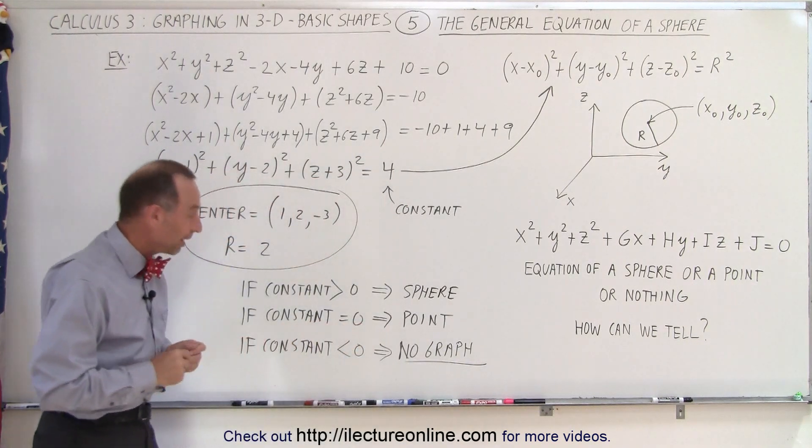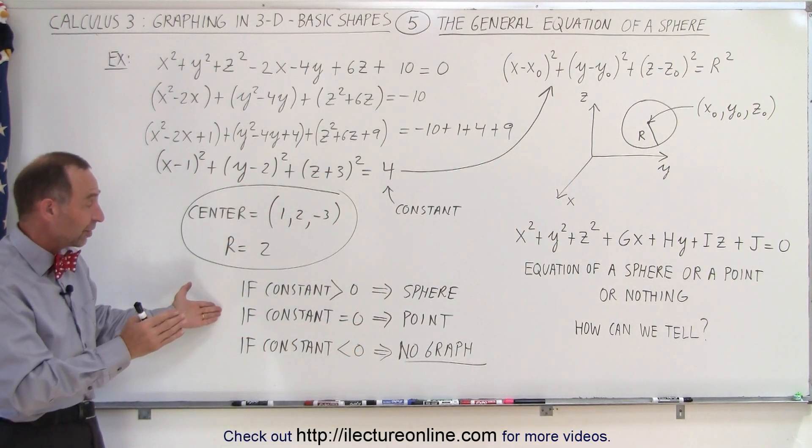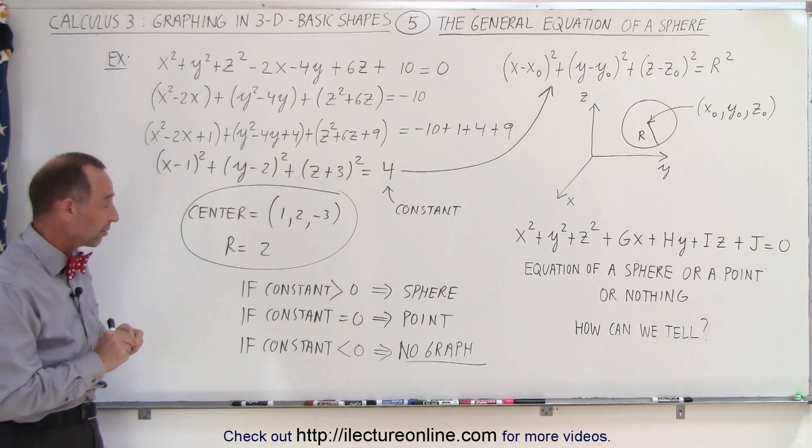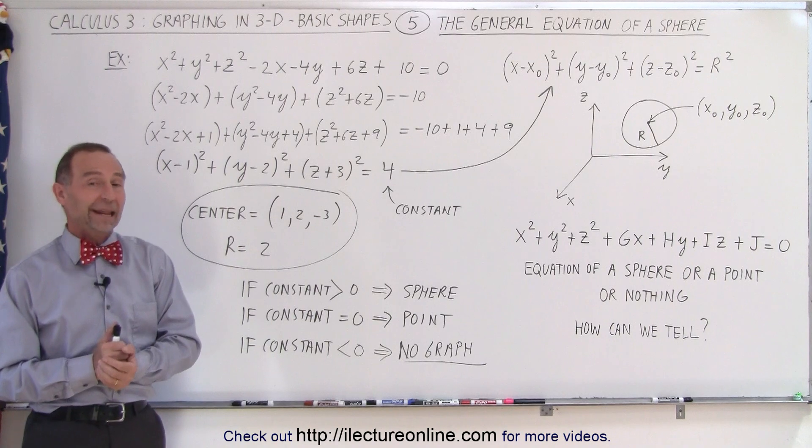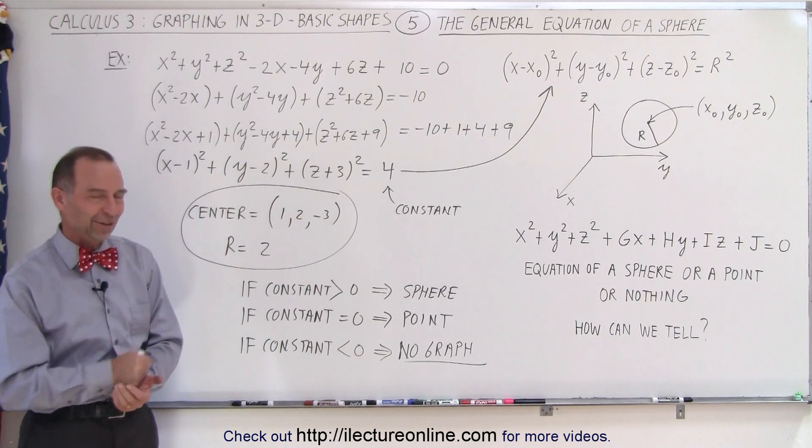Here we go. So, if the constant is greater than zero, we have a sphere. If it's constant equal to zero, we have a single point in three-dimensional space. And if the constant is less than zero, there's no graph at all. It doesn't represent anything in the real world. And that's how it's done.